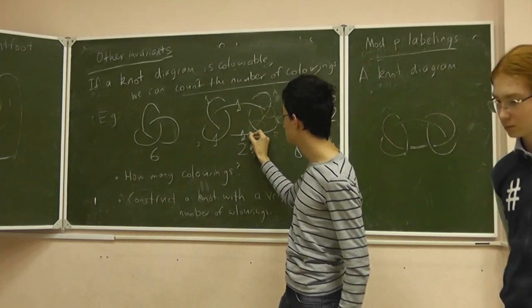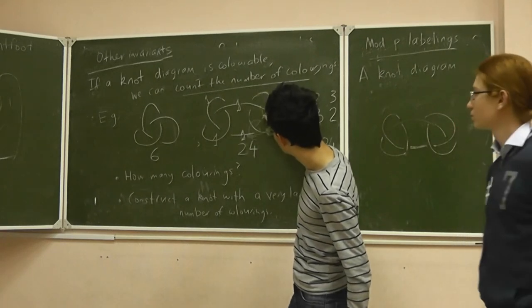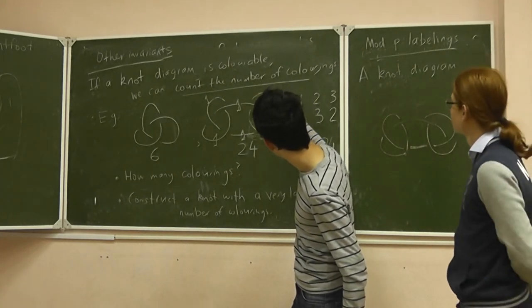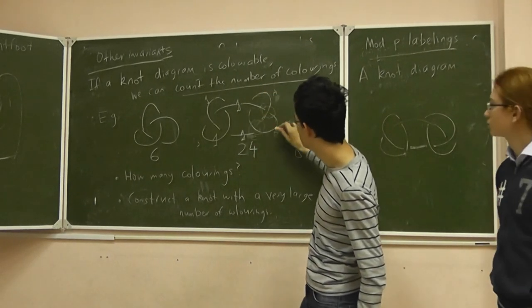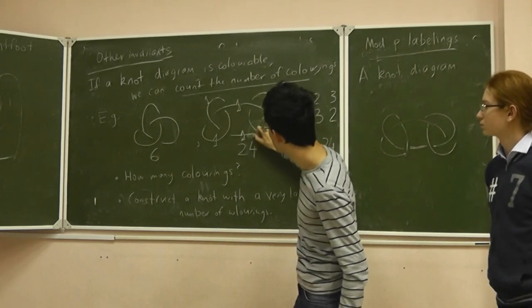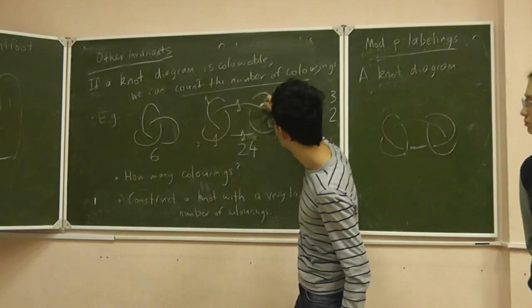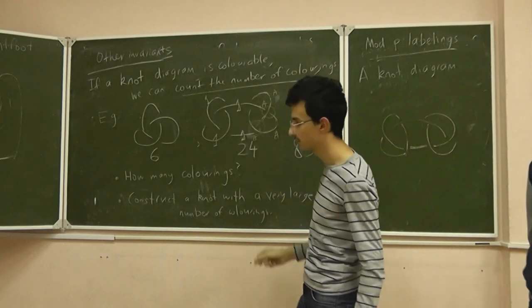then in this intersection we already have A and B. And so this must be C, and here we also have A and B, so this must be C. And if these arcs are of the same color, A and A, then this and this also should be A. So in any case, these two arcs are of the same color.